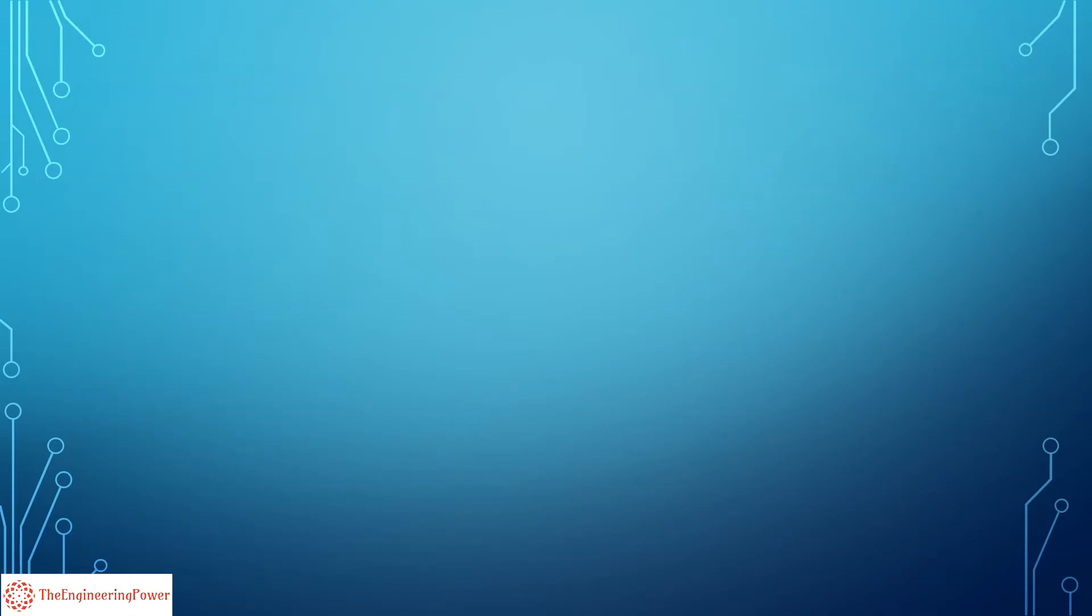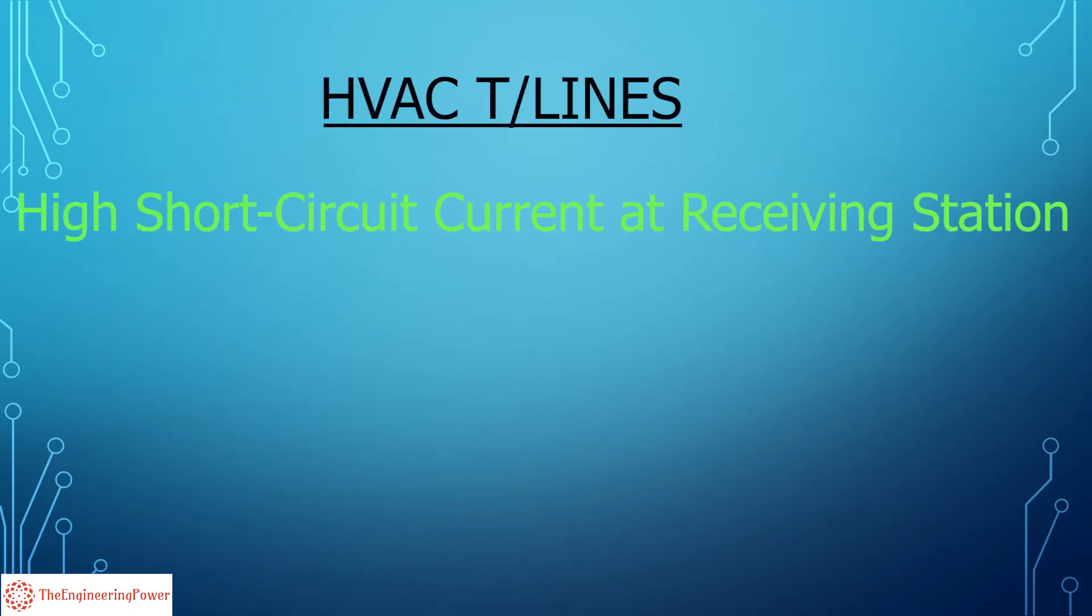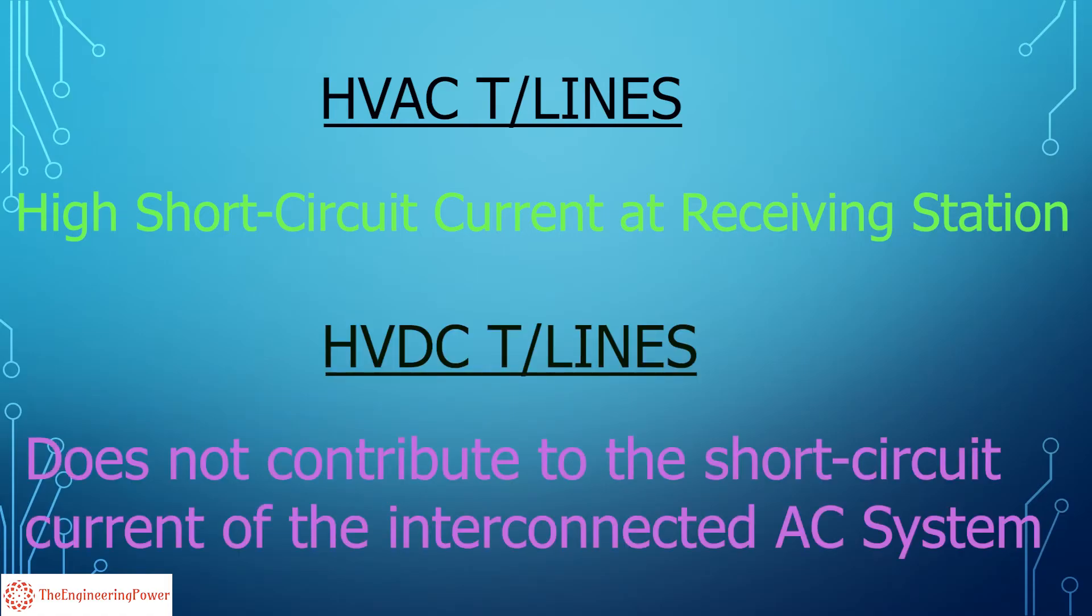Short circuit currents. In long HVAC transmission lines, the short circuit current level is high at the receiving station, whereas HVDC system does not contribute to the short circuit current of the interconnected AC system.